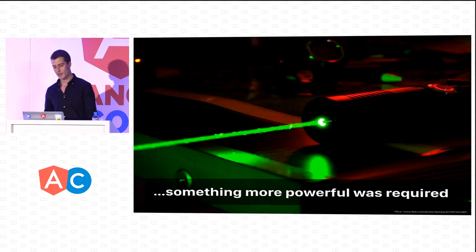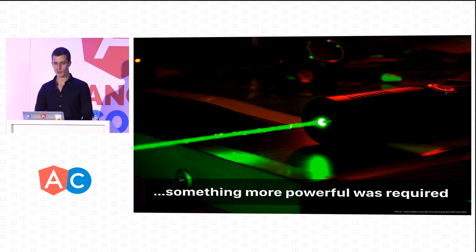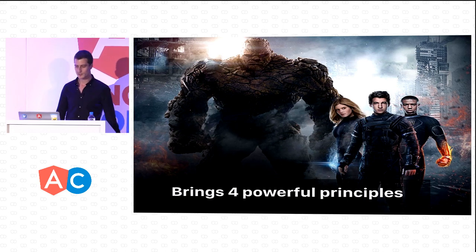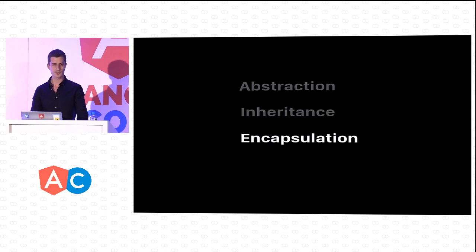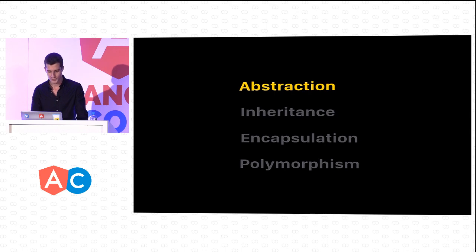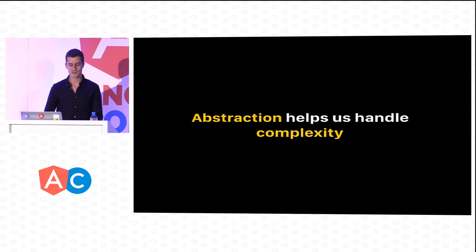Something more powerful was born: object-oriented programming, which brought its four main core principles — abstraction, inheritance, encapsulation, and polymorphism. We're mostly going to talk about abstraction. Abstraction basically helps us handle complexity.